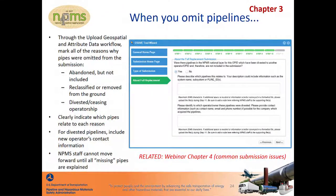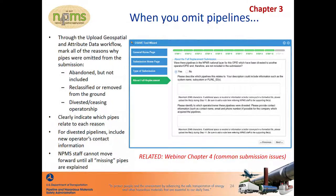In the OSAVE Upload Geospatial and Attribute Data workflow, you are asked a series of questions related to what changes have occurred since the last submission. Several of these questions are related to pipelines that were intentionally omitted from this year's submission. Reasons that the pipelines were not included are: they may have been abandoned but are not required because they fall onshore and do not cross a commercially navigable waterway; they were reclassified or removed from the ground; or they were divested or ceasing operatorship. In each one of these scenarios, you'll be prompted to describe in a text box the pipelines in the existing NPMS national data layer that it applies to. We would like for you to identify the pipelines that will make it the most clear to us — this could be a list of PLINE IDs, a list of systems, or even a statement saying all pipelines in a particular state.